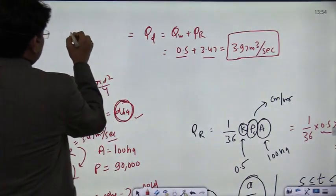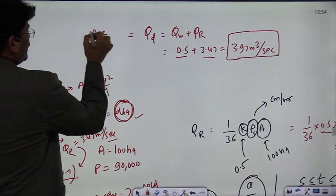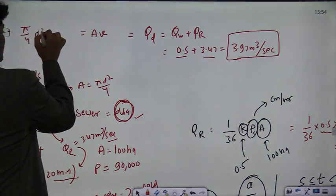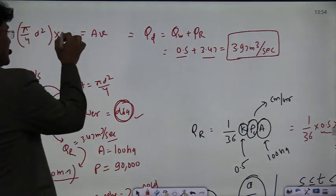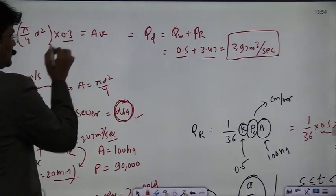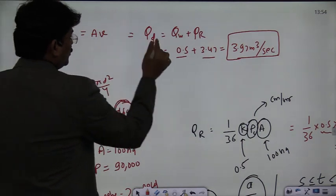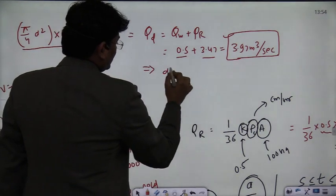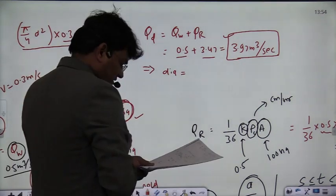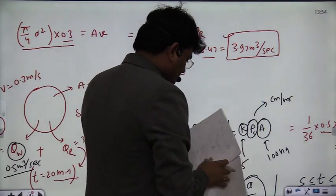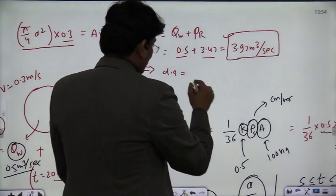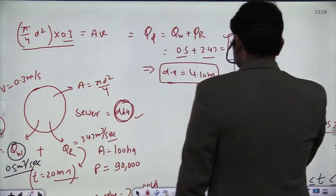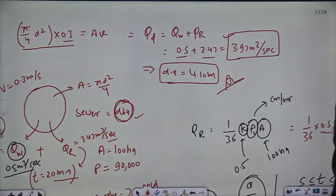The design discharge equals area × velocity. Since the sewer runs full, the area is (π/4) × d², and the velocity is 0.3 m/s. Setting 3.97 = (π/4) × d² × 0.3 and solving for the diameter, d comes out to be 4.10 meters. This is the required diameter of the sewer. Thank you so much for watching.